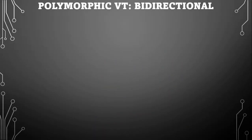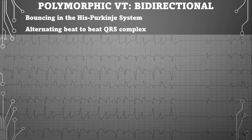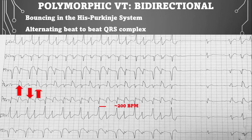This is bidirectional VTAC — a very rare type of VTAC. It occurs when the impulse bounces back and forth in the His-Purkinje system. Just imagine two professional ping-pong players quickly hitting the ball back and forth — the ball is the impulse in the His-Purkinje system. With this rhythm, we'll see alternating beat-to-beat QRS complexes. It sort of looks like bigeminal PVCs, but the rate is too fast.